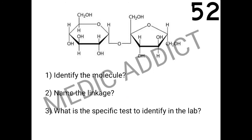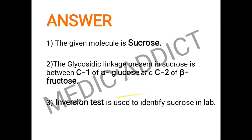Based on the given image, we have to identify the molecule, name the linkage present, and identify the specific test to identify this molecule in the lab. The given molecule is sucrose. The linkage present is between carbon 1 of alpha glucose and carbon 2 of beta fructose — that is the alpha 1 beta 2 glycosidic linkage. The inversion test is used to identify sucrose in the lab.